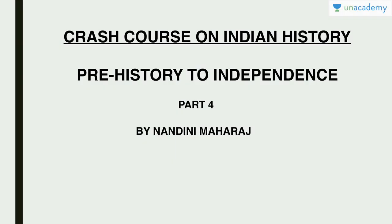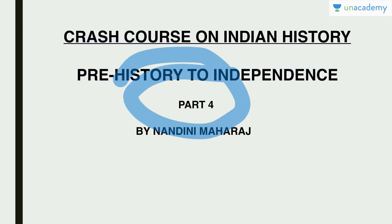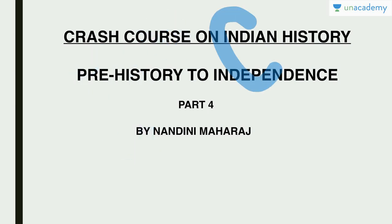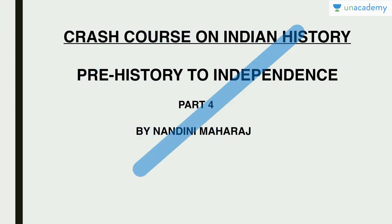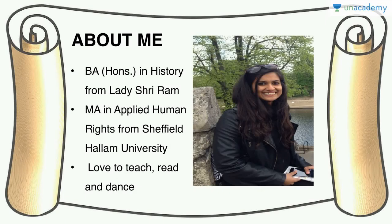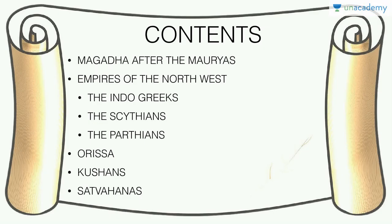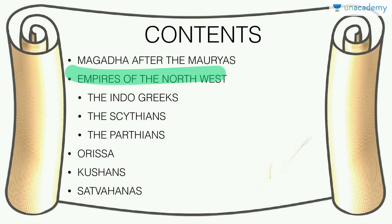In part four, we'll be talking about more early empires — small states all over India that kept rising and falling. We'll cover Magadha after the Mauryas, then empires of the Northwest: the Indo-Greeks, Scythians, and Parthians. We'll also look at Orissa and the Satavahanas. Alexander's invasion opened doors for Greeks and Central Asians to come into India. The last Mauryan king was Brhadrata, killed by his army commander Pushyamitra Shunga.